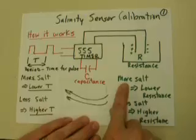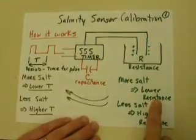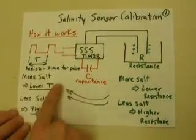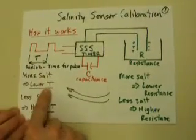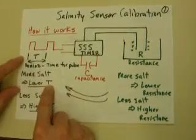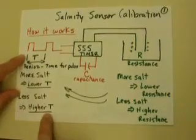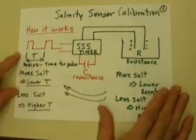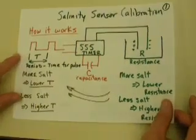Generally speaking, more salt means electrons flow easier and a lower resistance, and less salt, conversely, higher resistance. Bringing that over and relating it to the period, more salt means lower period or higher frequency, and less salt means higher period or lower frequency. This is the basic operation of how the sensor works, and we'll take advantage of this to do our calibration and use it to control our tank.